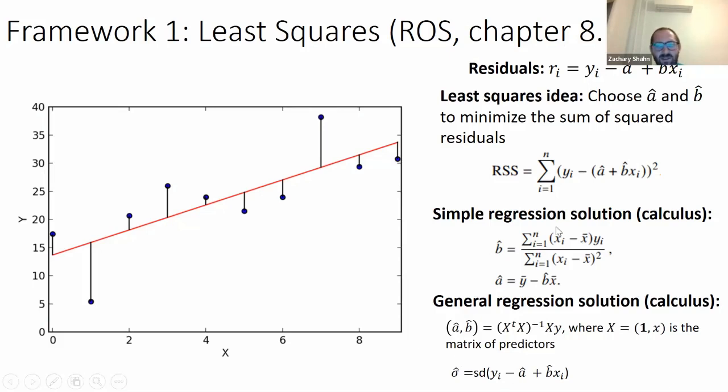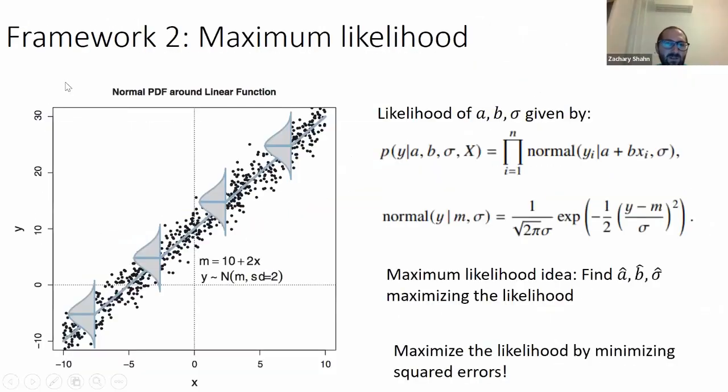So this is the least squared framework. That's framework one to arrive at the coefficient estimates where we didn't really use probability at all, just least squares. We didn't have any probability model for how those points are generated. We didn't use normality at all.